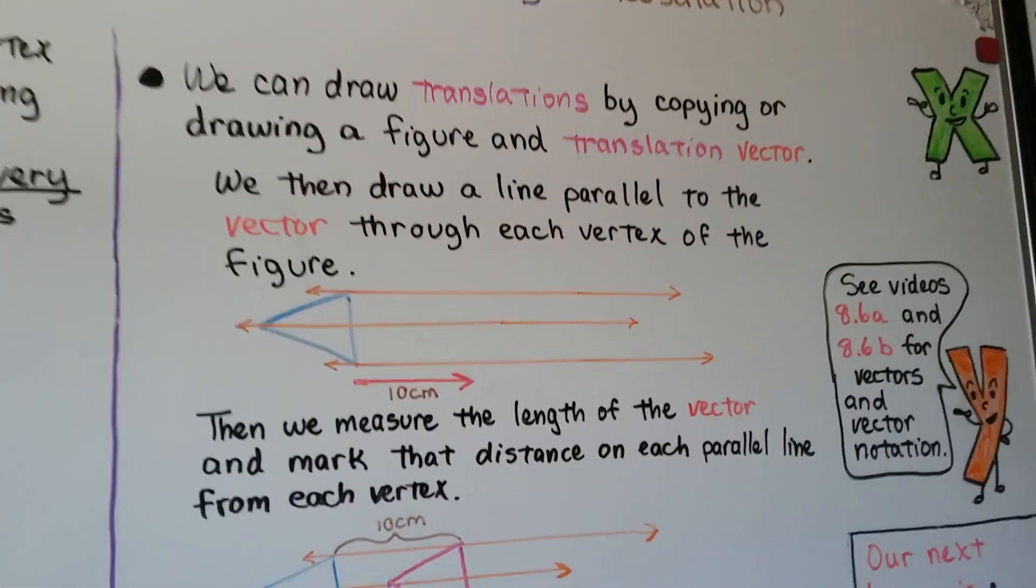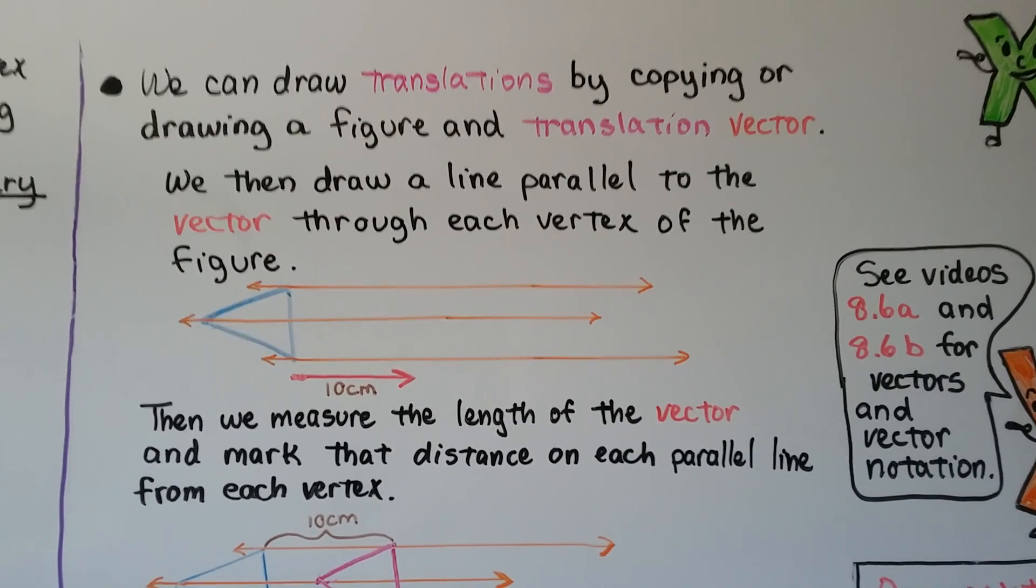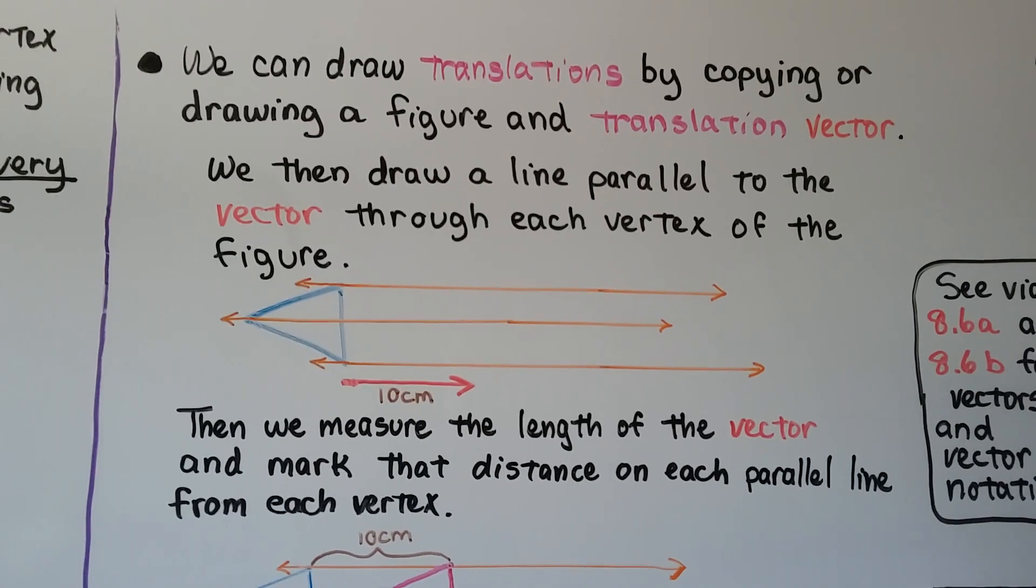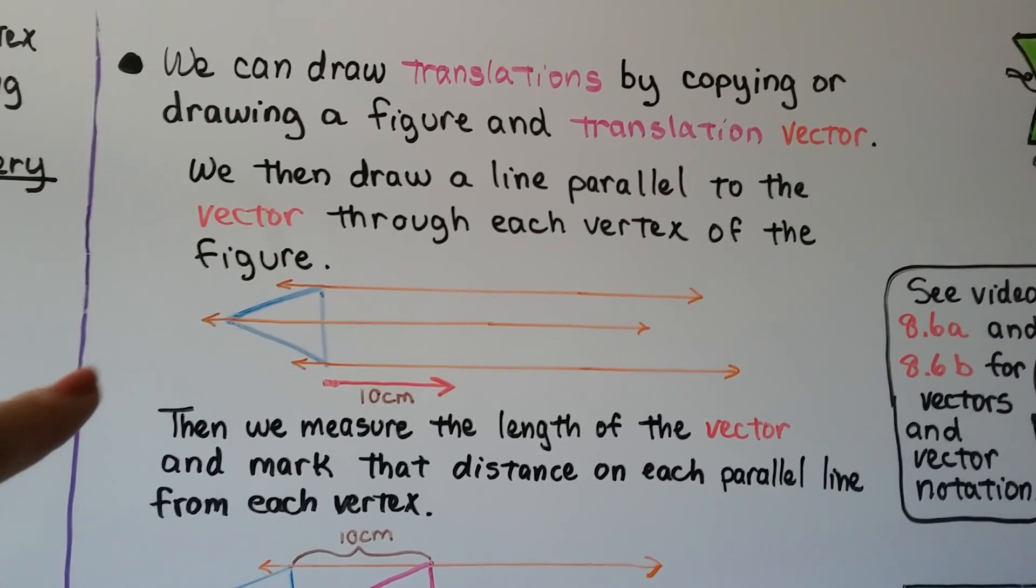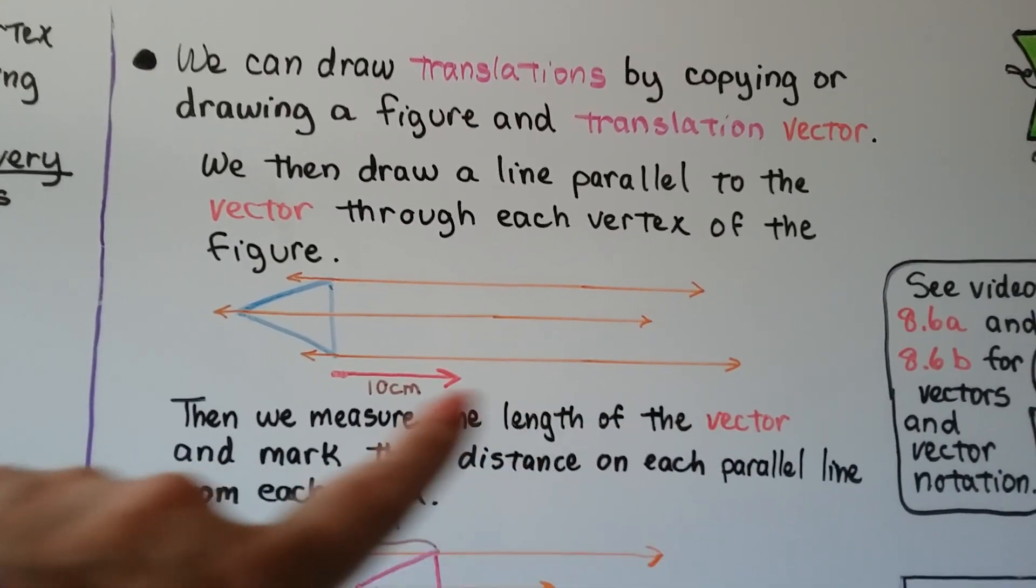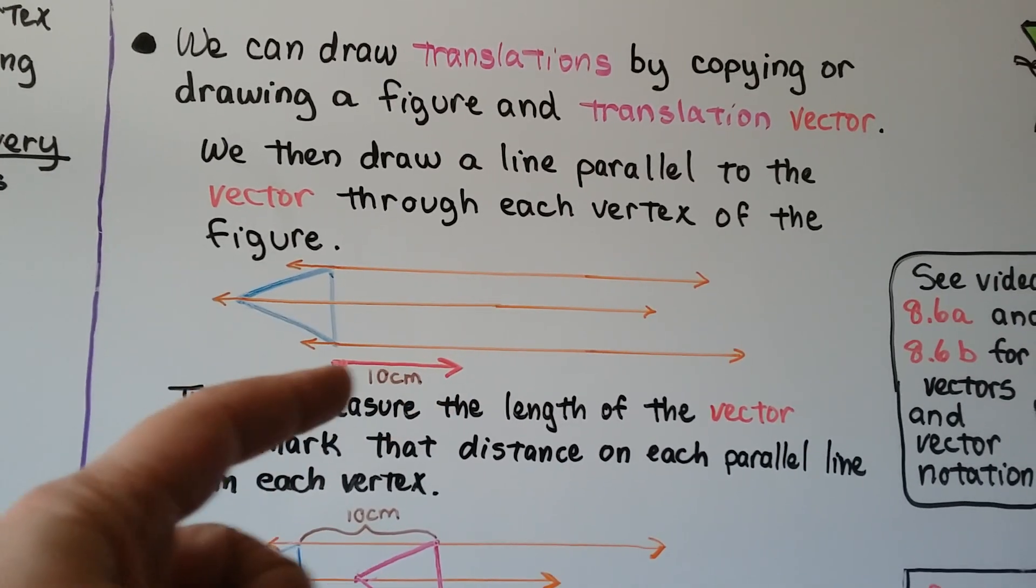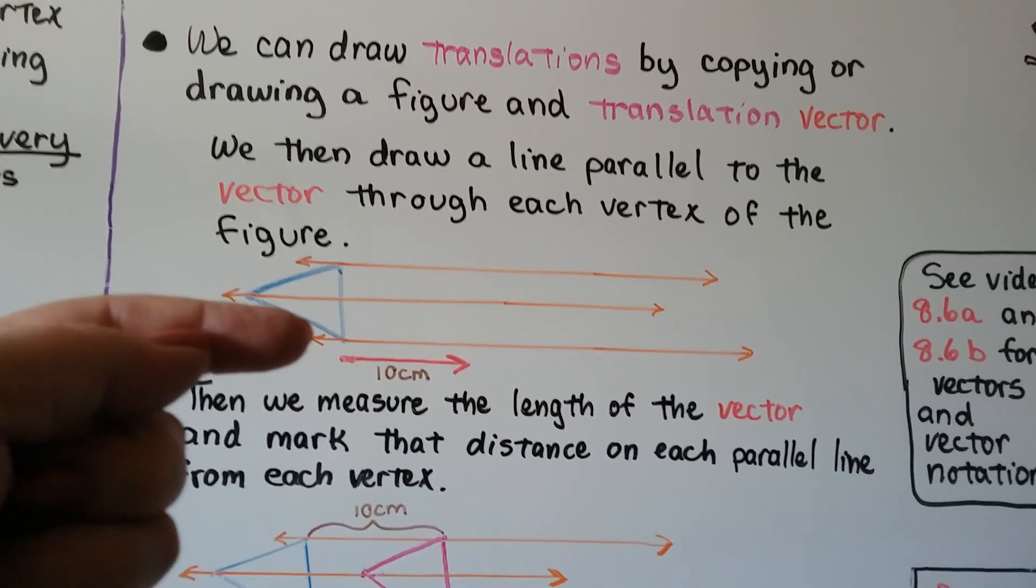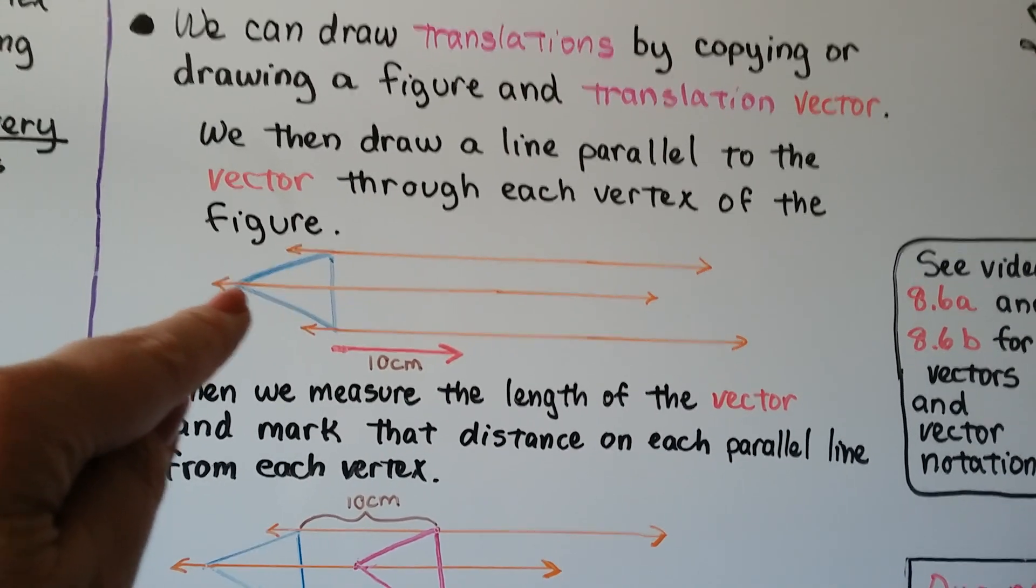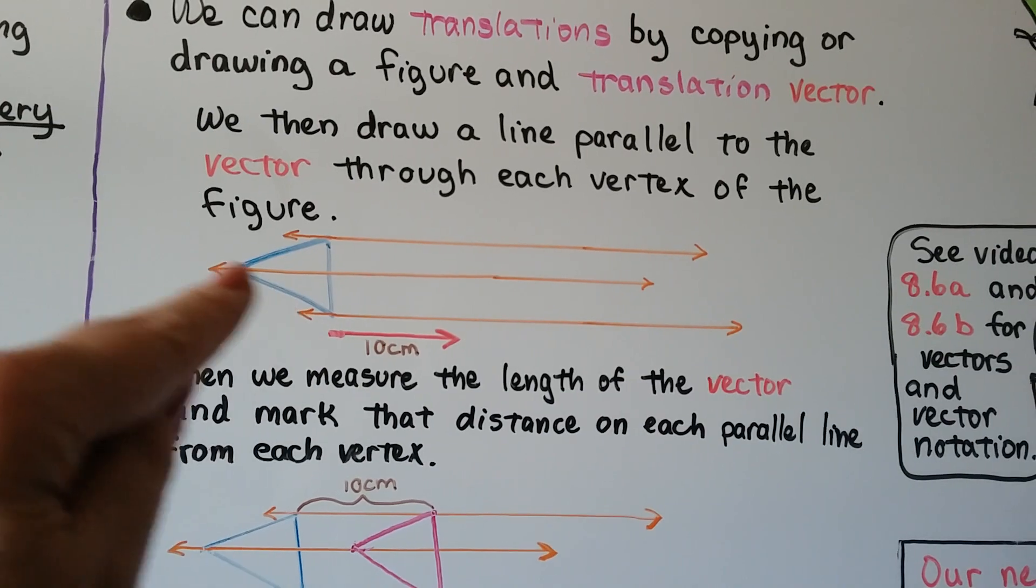We can draw translations by copying or drawing a figure and translation vector. Then we draw a line parallel to the vector through each vertex of the figure. If this is our red vector here, we're going to draw these orange lines parallel to it going through each of these vertices. See how it comes through each vertex?